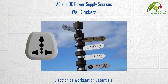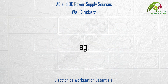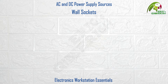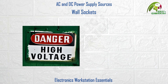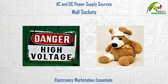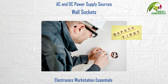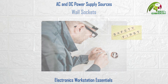Wall socket voltages and frequencies are not the same everywhere though. As an example, the wall socket voltage in the United States would be 120V AC at 60Hz. Now it's my duty and responsibility to warn you as a note of caution that these wall socket voltages are very high voltages and may lead to serious injuries if not handled with the proper safety precautions. So be extra careful and cautious when measuring or working with them.